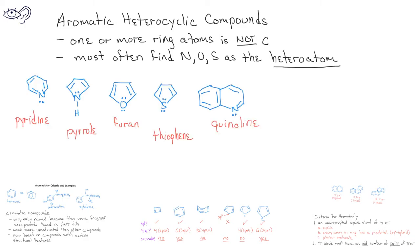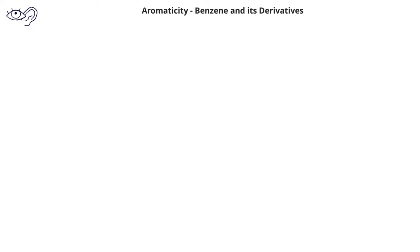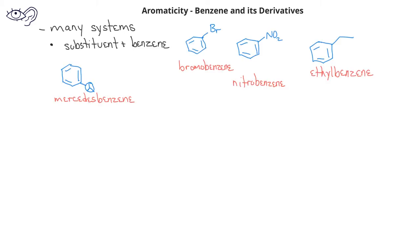The compounds shown below are aromatic heterocyclic compounds. Naming benzene derivatives can be quite complicated as there is a mixture of systems that are used. Some benzene derivatives are named by simply adding the word benzene to the name of the substituent. Examples of these would be bromobenzene, nitrobenzene, and ethylbenzene. However, other benzene derivatives have common names. Instead of calling this compound methylbenzene, it's known as toluene.